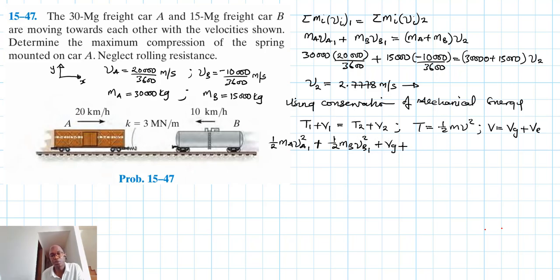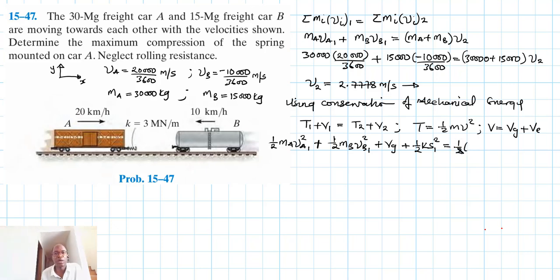The gravitational potential energy V_g is zero in both states. In the second state, the cars are coupled, so the kinetic energy term is one-half times (m_A plus m_B) times v2 squared, and the elastic potential energy is one-half times k times s squared.